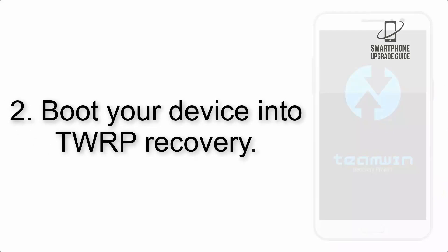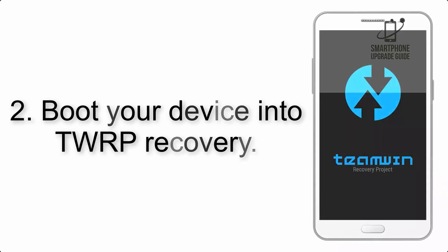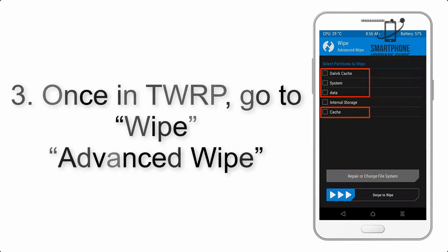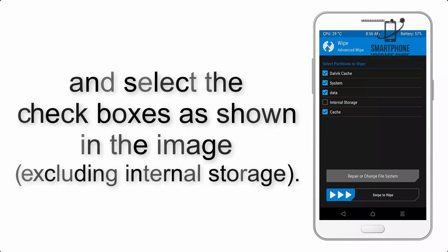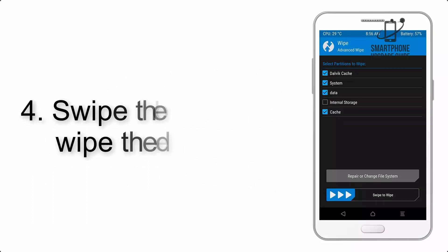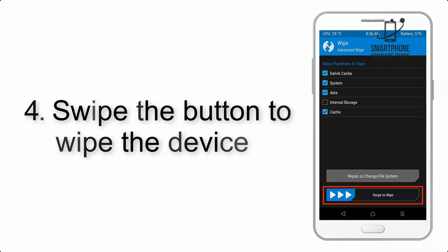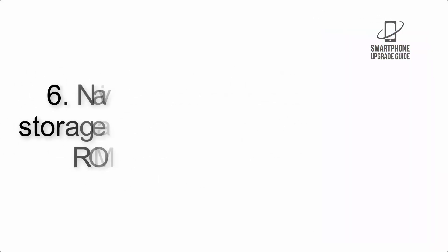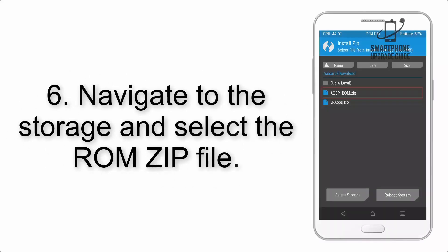Step 2: Boot your device into TWRP recovery. Once in TWRP, click on Wipe, then Advanced Wipe, and select the checkboxes as shown in the image, excluding internal storage. Step 4: Swipe the button to wipe the device.